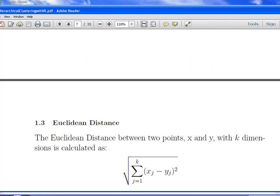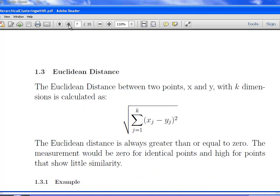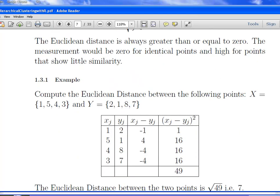Euclidean distance. The Euclidean distance between points X and Y with k dimensions is calculated as follows. This is the little formula here. We have a case X and a case Y. And each item of case X has, let's say, four variables associated with both of these cases, these items. What we're going to do is compute the Euclidean distance between the two. What we're going to do is sum up all the differences between the values. A quick remark before I get into it. The Euclidean distance is always greater than or equal to zero. The measurement would be zero for identical points, very low for very similar points, and very high for points that are completely dissimilar.